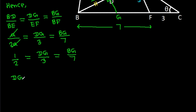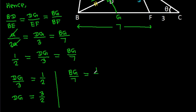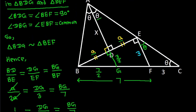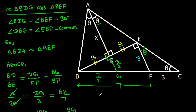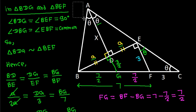So DG over 3 is equal to 1 over 2, so DG will be 3 over 2. And BG over 7 is equal to 1 over 2, so BG will be 7 over 2. And FG will be BF minus BG, that will be 7 minus 7 over 2, and it will be 7 over 2.